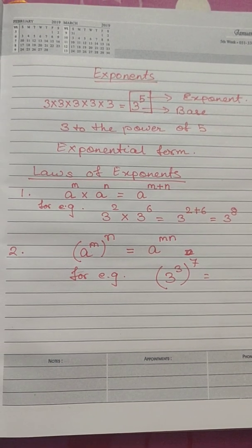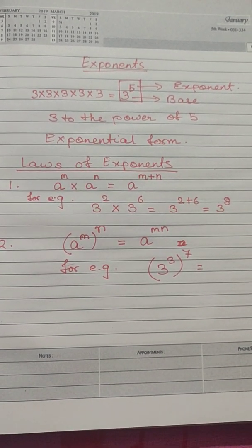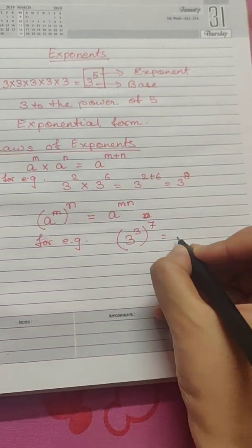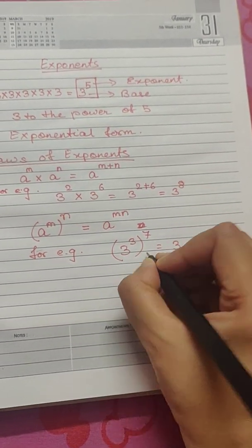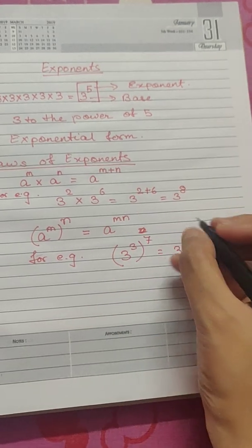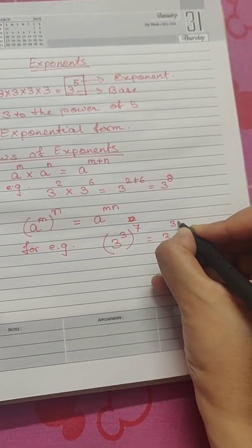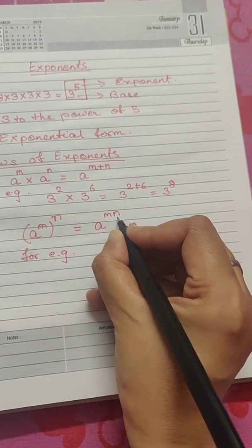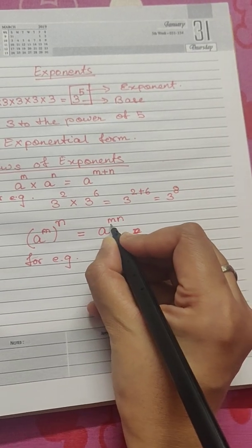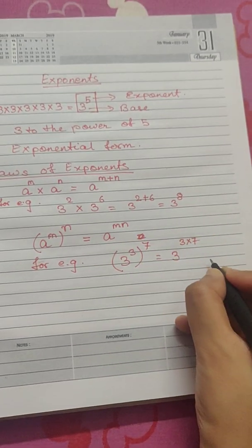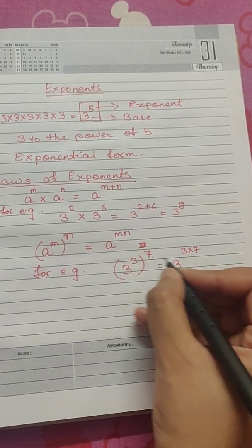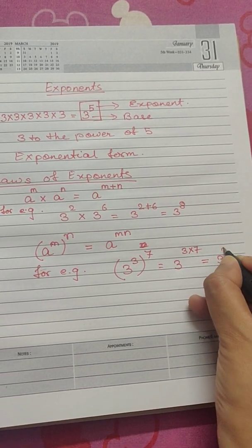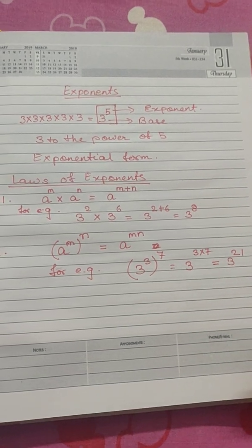So, to ease out our calculation, we will be using these laws and we will be getting 3, according to the law, the base remains the same, to the power of 3 into 7. Here, mn that was written means m multiplied by n. That is why I have multiplied the two exponents. So, we get the answer to be 3 to the power of 21.